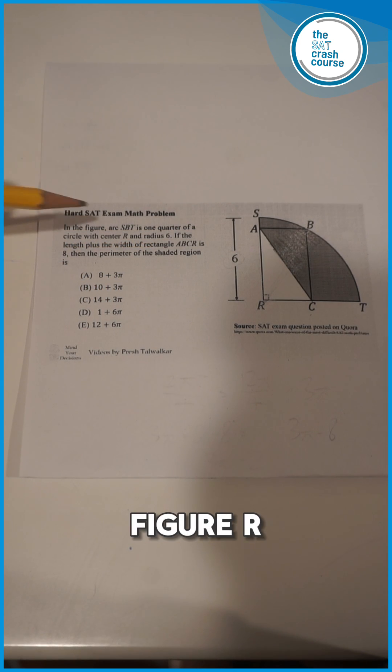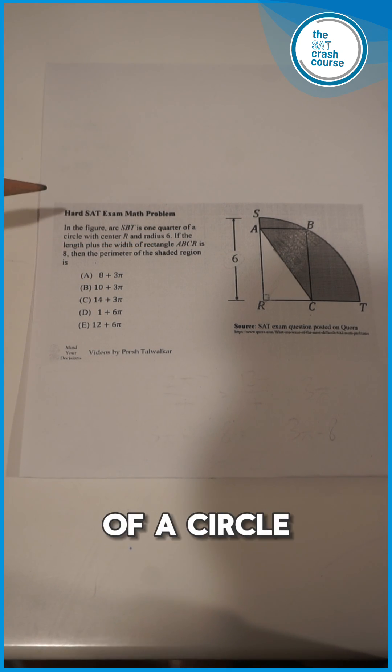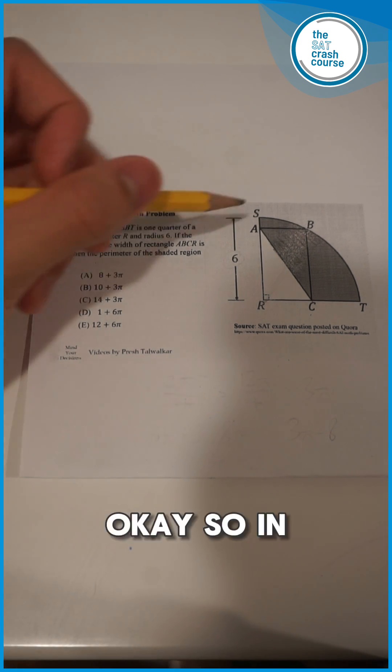It says in the figure arc SBT is one quarter of a circle with center R and a radius 6. If the length plus the width of the rectangle ABCR is 8, then the perimeter of the shaded region is...